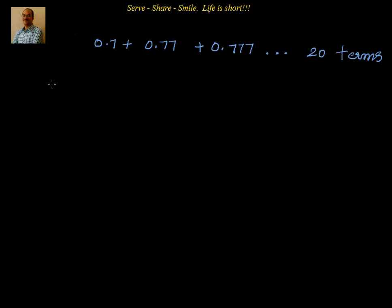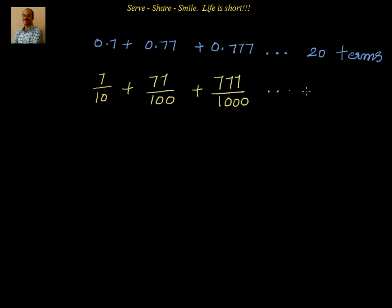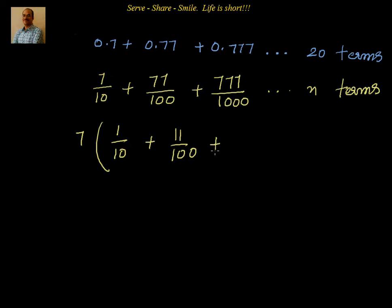First, we convert the terms into fractions: 7/10 plus 77/100 plus 777/1000, up to 20 terms. I will find the sum for n terms, then substitute n = 20 at the end. The first step is to take the number common to all terms — that is 7 — giving us 7 times (1/10 + 11/100 + 111/1000) up to n terms.